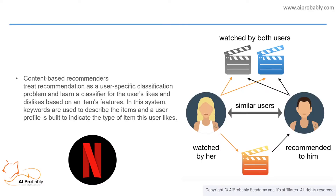Now let's look at content-based recommender systems. It is mainly classified as an outgrowth and continuation of information filtering. In this system the objects are mainly identified by their features. A content-based recommender system learns a profile of a new user's interests based on the features present in objects the user has rated. It's basically a keyword-specific recommender system, hence keywords are used to describe the items. The algorithm recommends similar items that the user has used in the past, liked, or is examining currently.